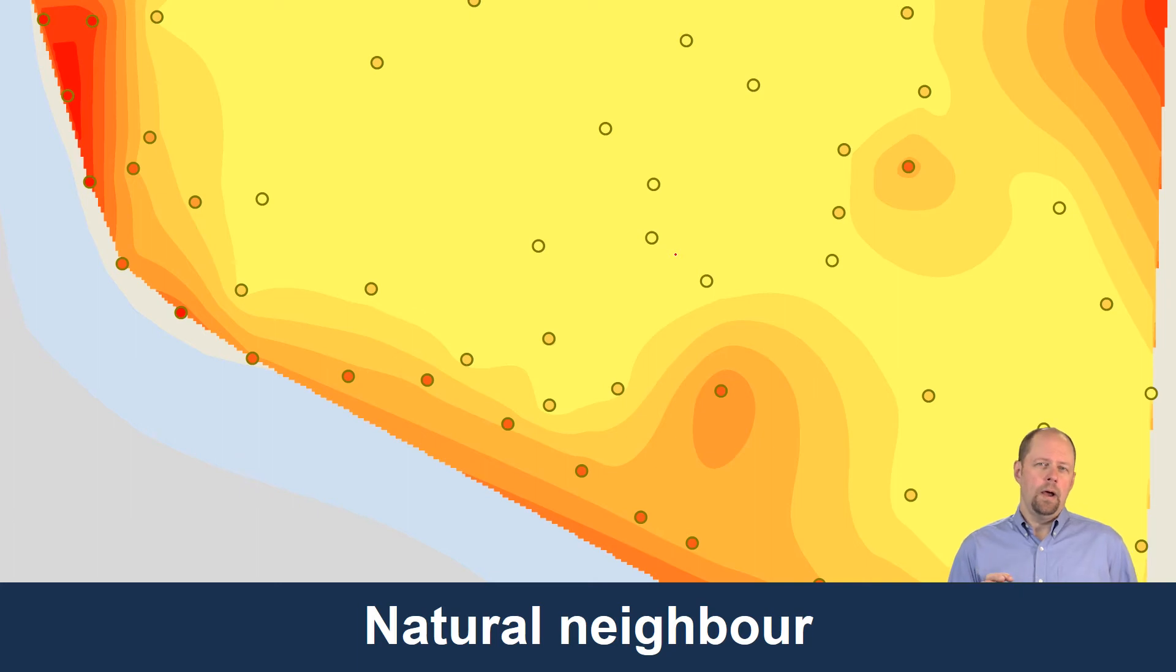You'll see that this is a relatively smooth landscape. If we compare this to a Thiessen polygon version with abrupt boundaries at the edge of each polygon, you'll see that this is much smoother.